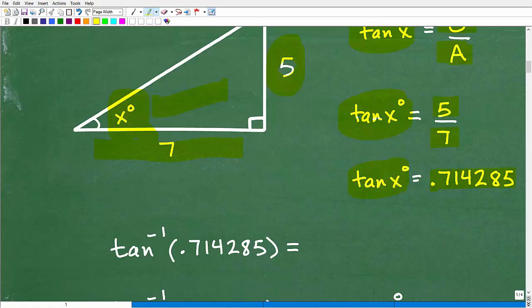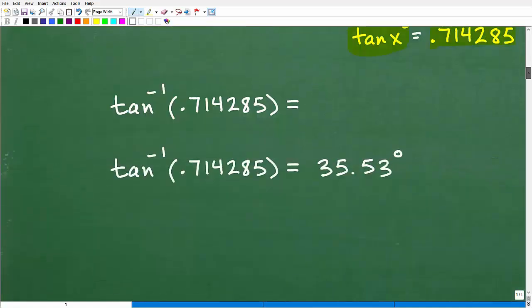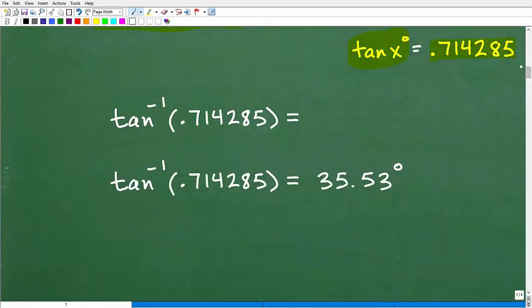Now we have to use our calculator to ask a question. Here's the question we're going to ask our calculator. We're going to say: Mr. Calculator, tell me the angle. What angle has a tangent of 0.714285?